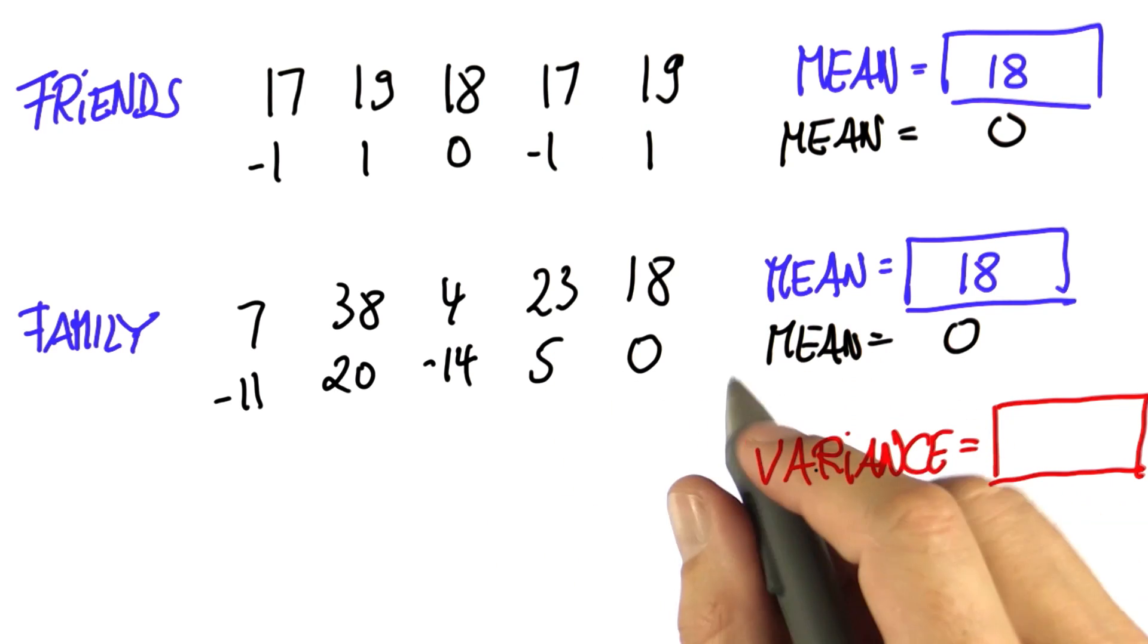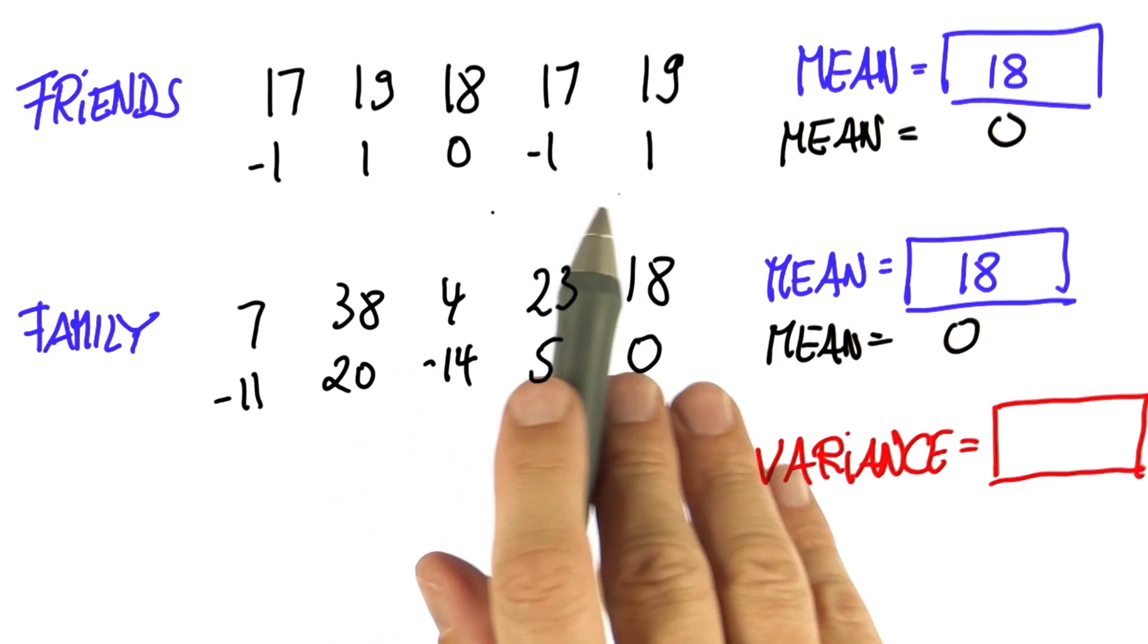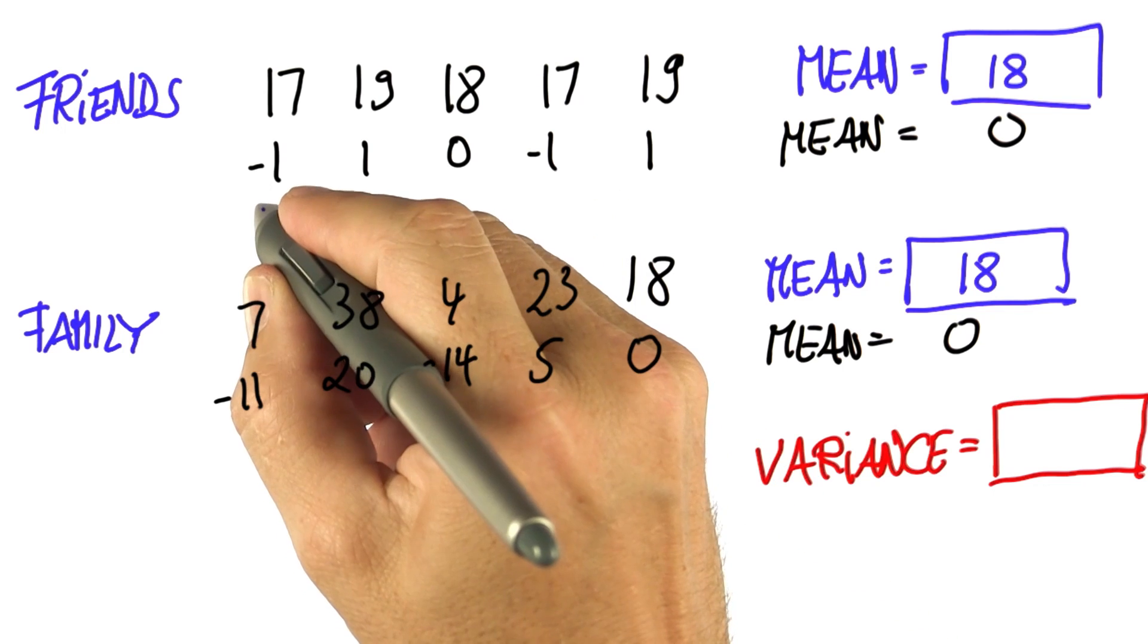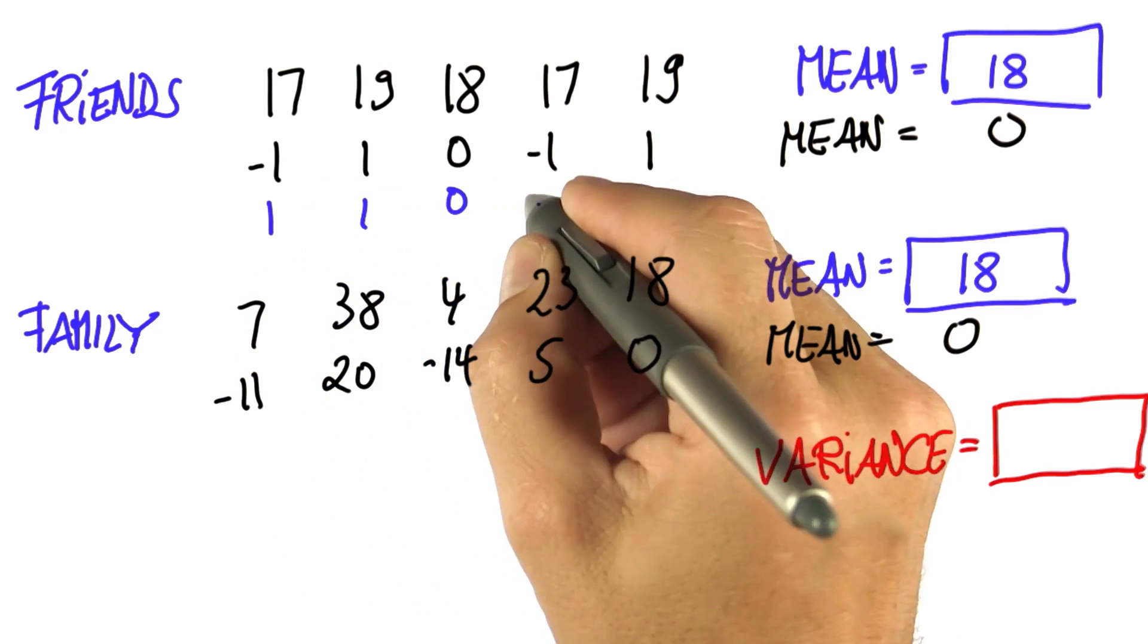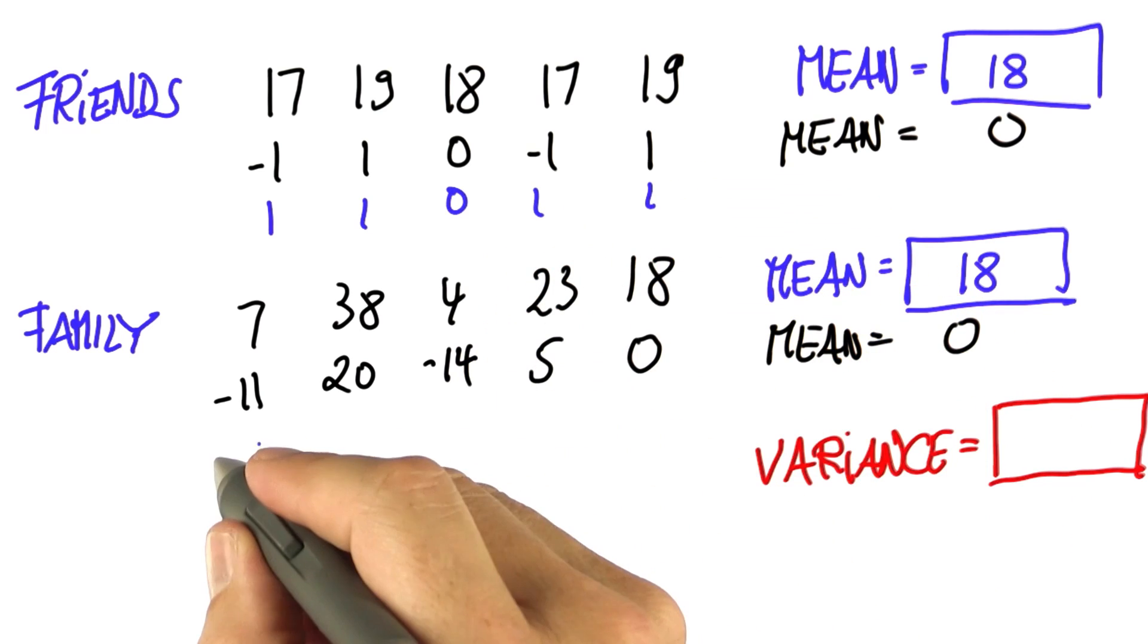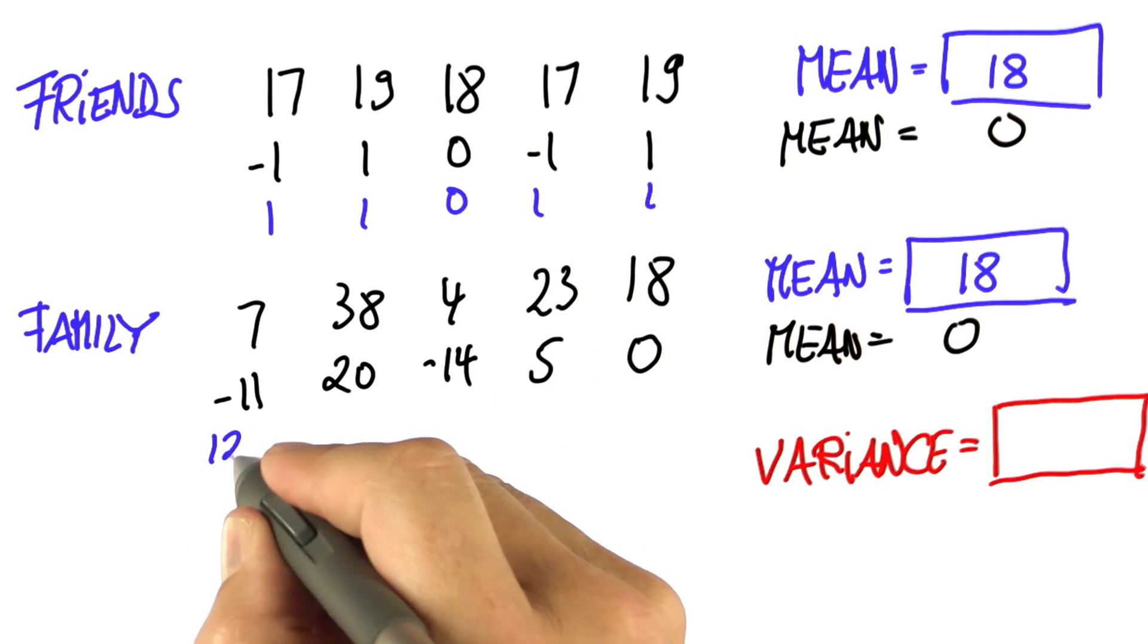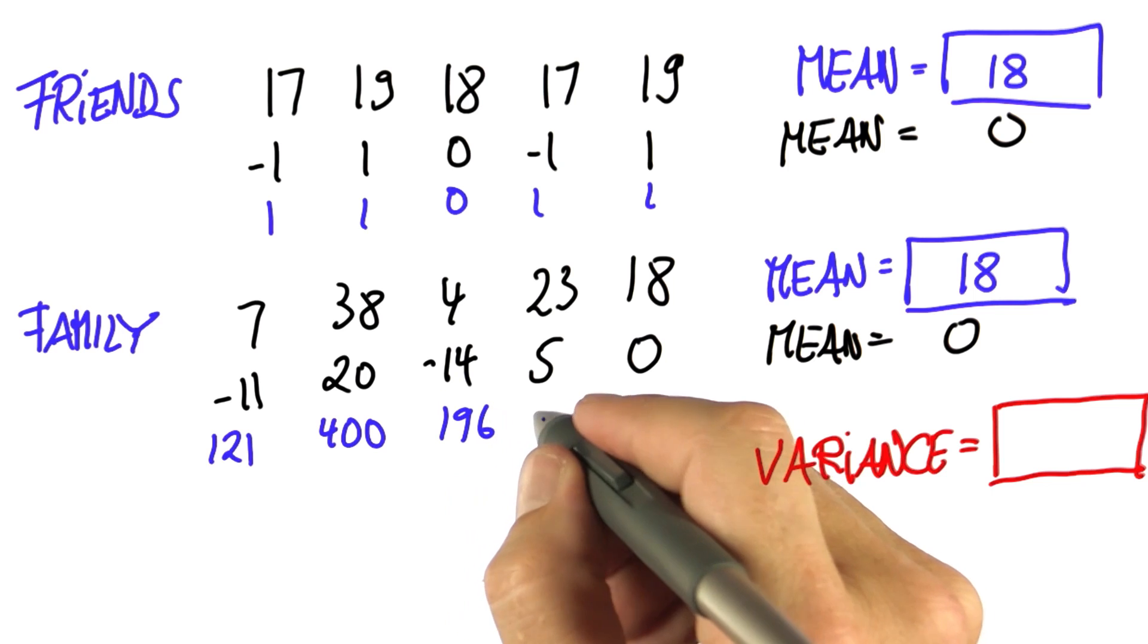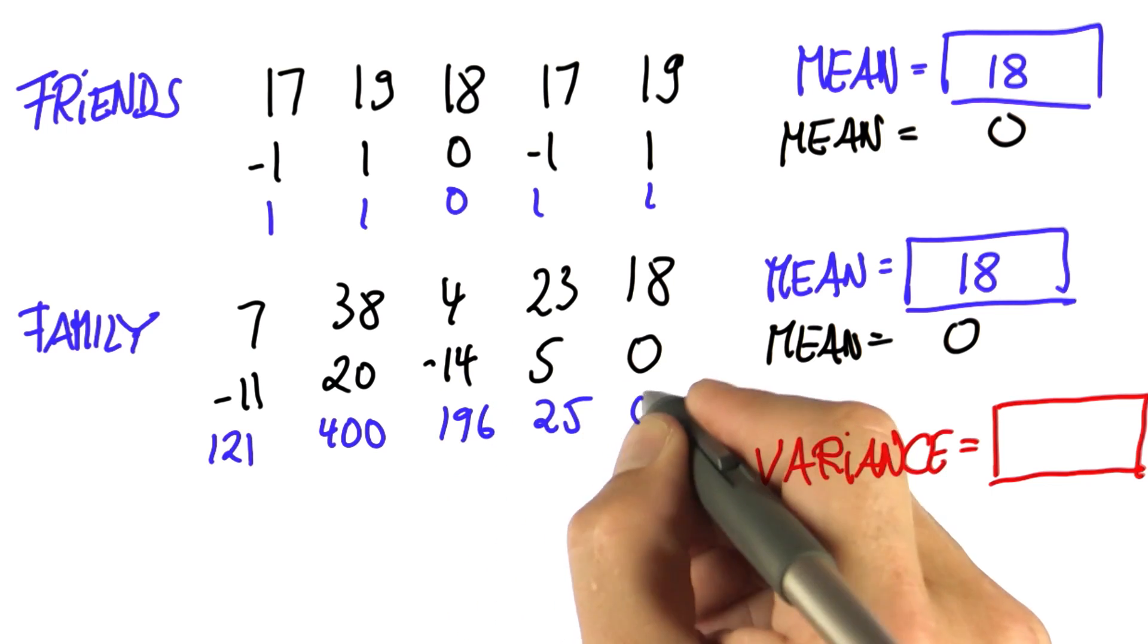And what's commonly added up are the squares of those values. The squares here are 1, 1, 0, 1, 1, whereas over here they are 121, 400, 196, 25, and 0.